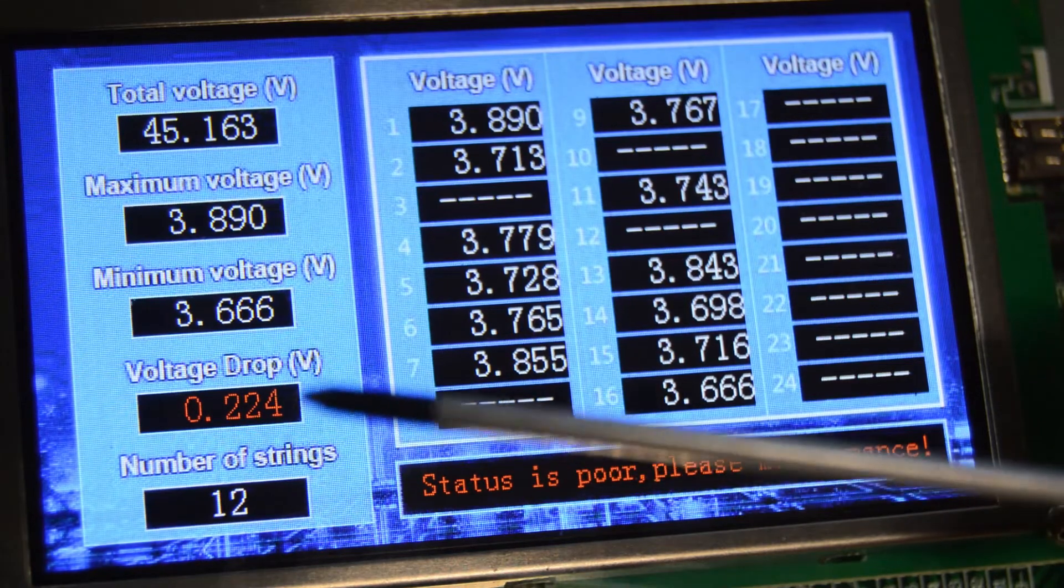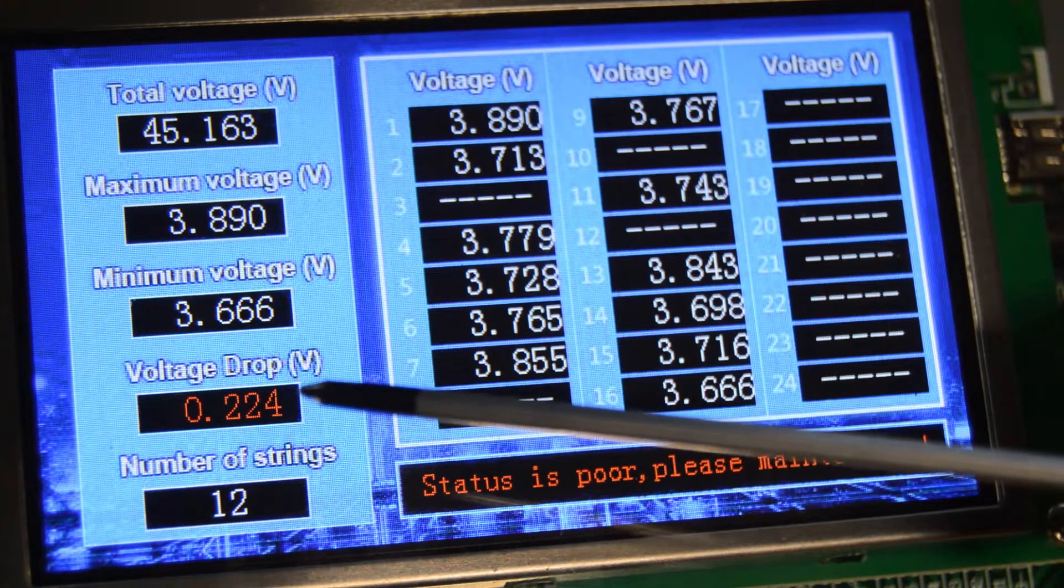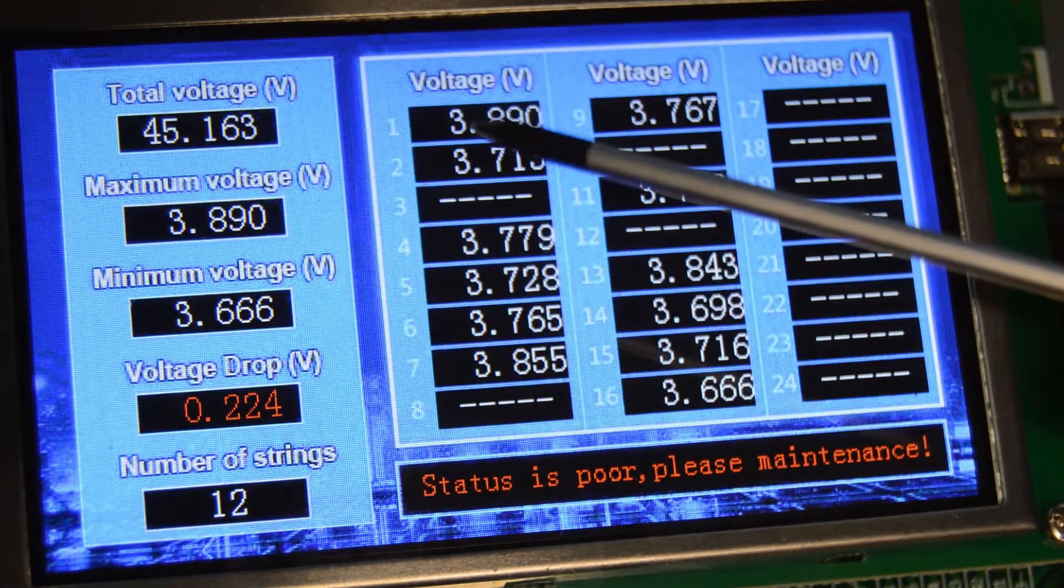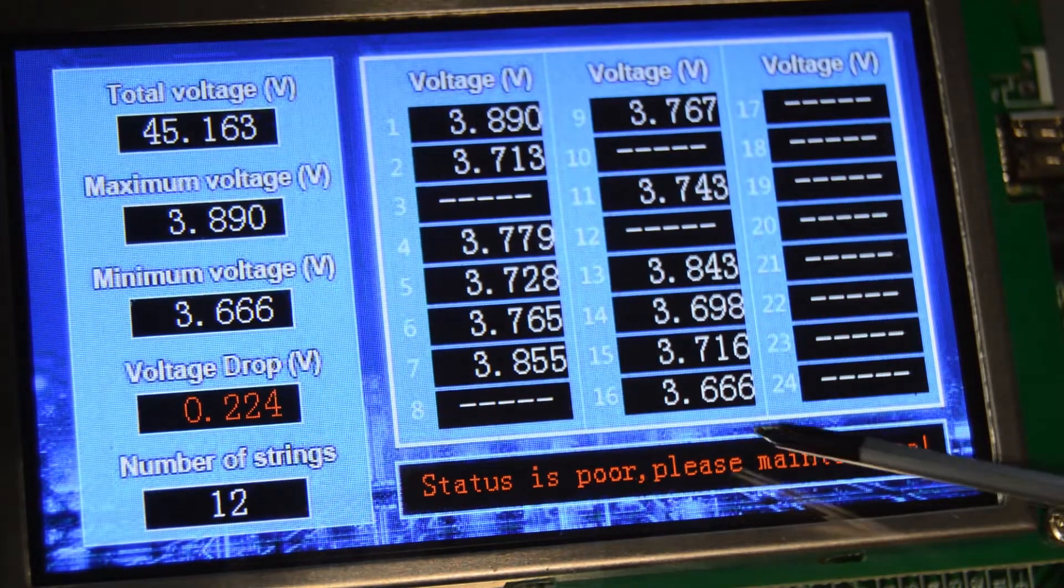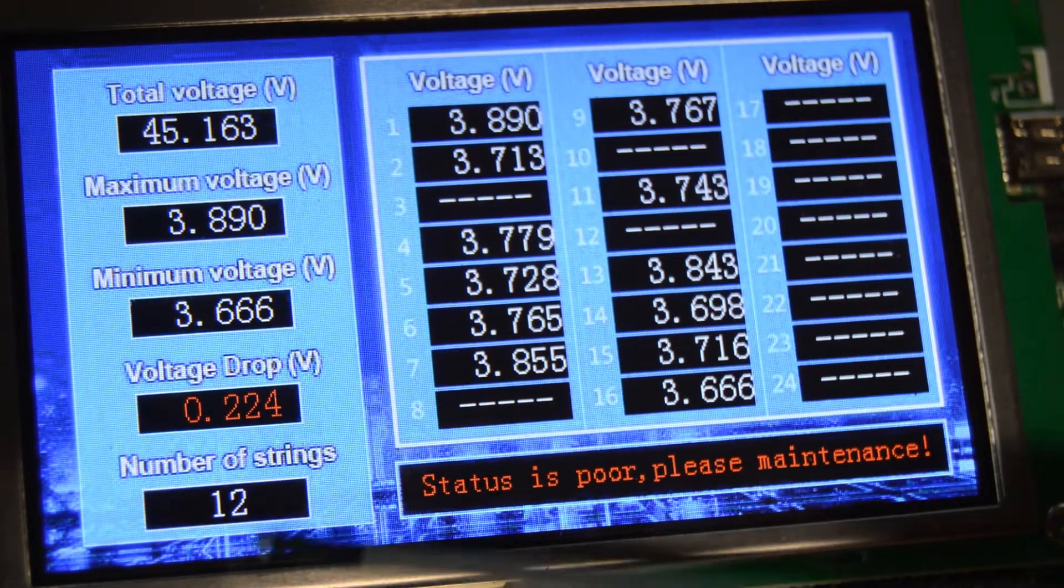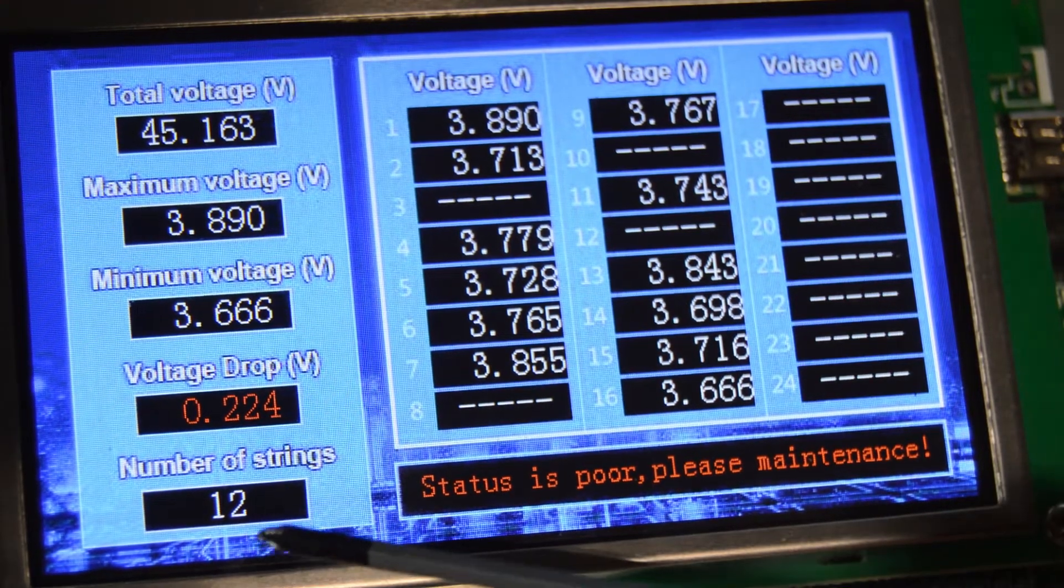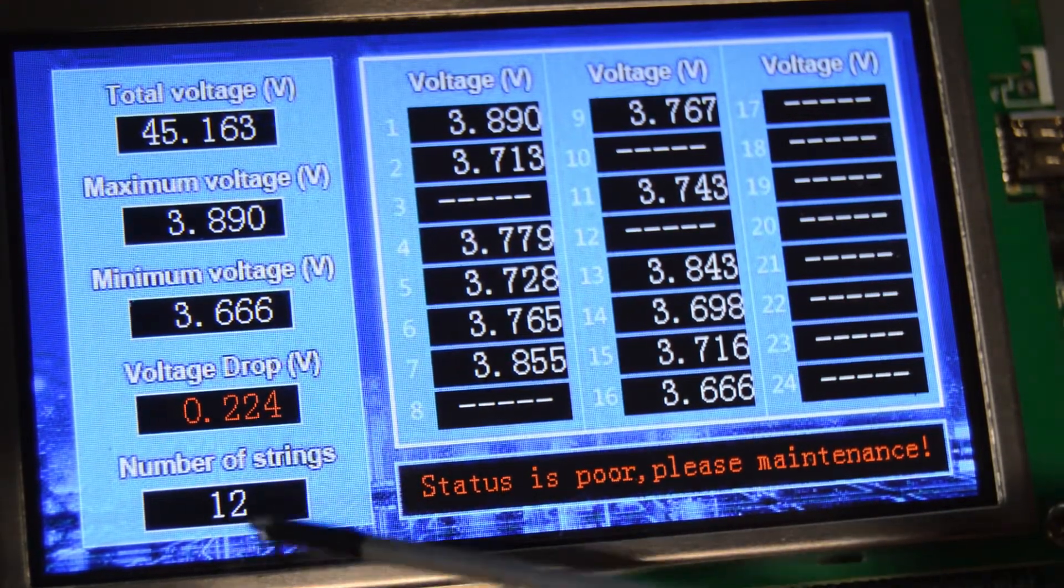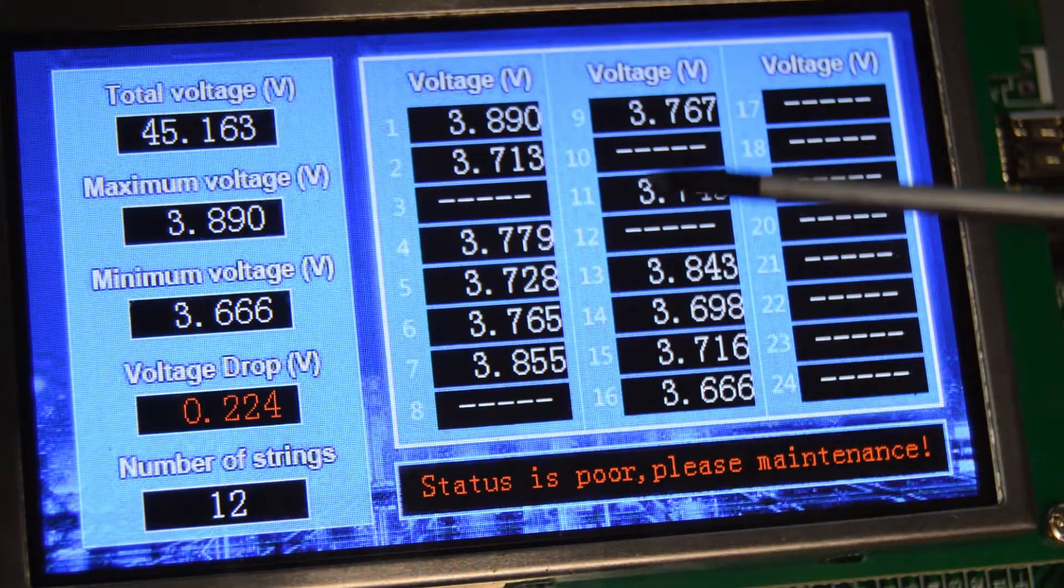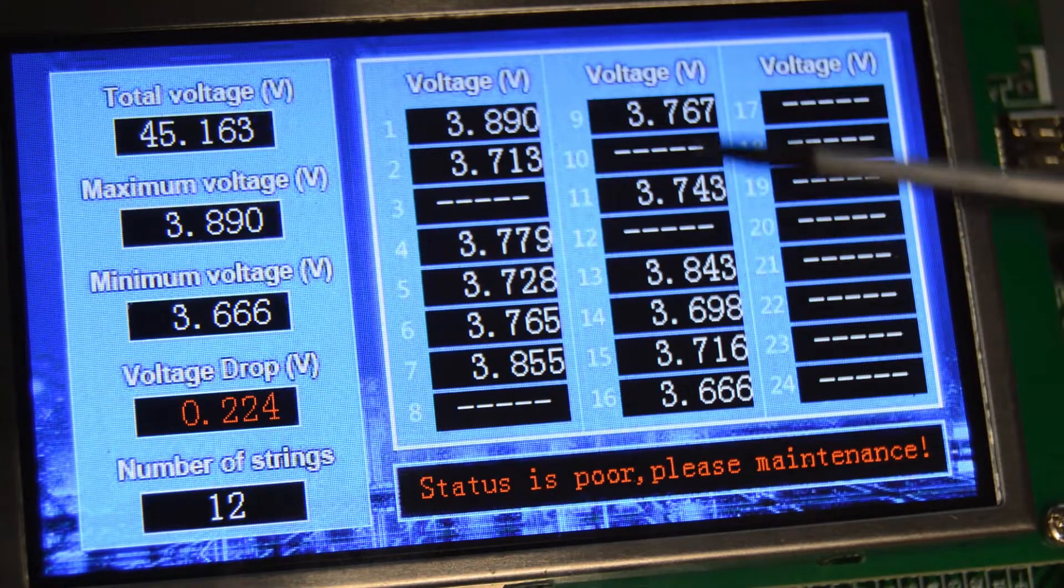Voltage drop is actually the difference between the highest and lowest group, so our difference in voltage between group one, which is the highest, and group sixteen, which is the lowest, is 0.224. Now this is the number of strings that it detects. This would usually give you an idea with a functioning battery if it's a 16S, 12S, and so on and so forth.